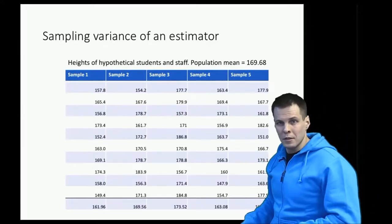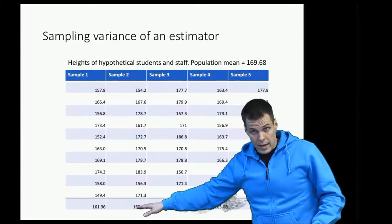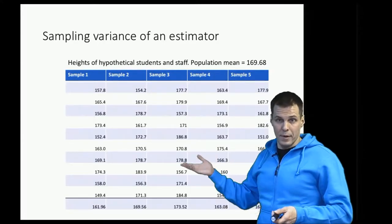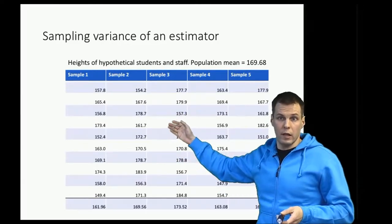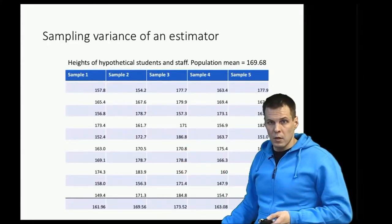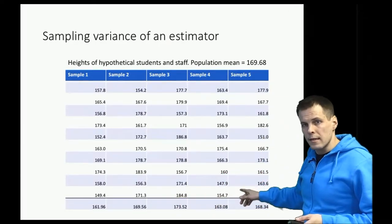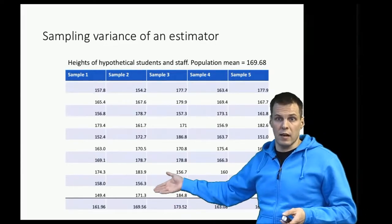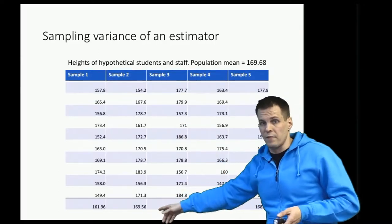Why do these values differ? Why do we get a different estimate from each sample? In a random sample, sometimes tall people get selected more often than short people, and sometimes short people get selected more than tall people. So this estimate varies from sample to sample, and this is called the sampling variance of an estimator. An estimator means any strategy we apply to data to calculate an estimate of the population.